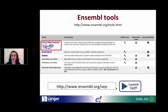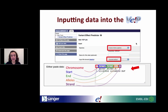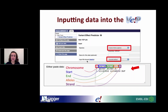Where can you find the VEP tool? It's under Ensembl Tools — we looked at BioMart last time, and now we've got VEP. You can click on the VEP icon or the spanner symbol. If you want to download the Perl script, this is the place to go. The web interface looks like this. You can run VEP for every single species within Ensembl, and your species doesn't even need to be in Ensembl, providing you've got FASTA files and GTF files for that species.